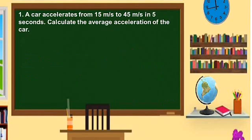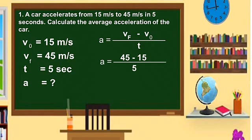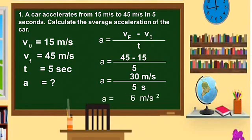Let us have an example. A car accelerates from 15 meters per second to 45 meters per second in 5 seconds. Calculate the average acceleration of the car. So we have the initial velocity equal to 15 meters per second, the final velocity equal to 45 meters per second, and the change in time is 5 seconds. Using the formula — final velocity minus initial velocity over time — we substitute: 45 minus 15 over 5. That is 30 meters per second over 5 seconds, giving an acceleration equal to 6 meters per second squared.